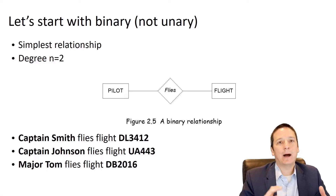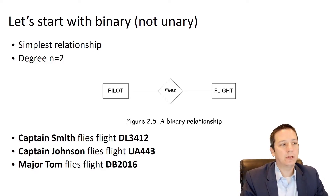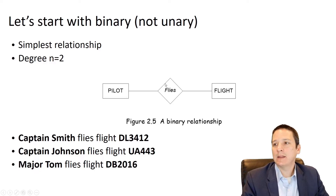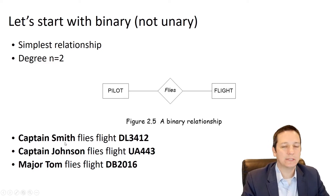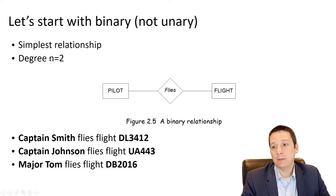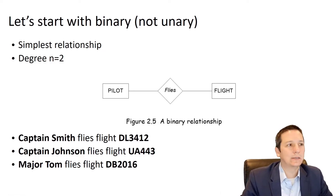To get started, we're going to talk about binary relationships, which is the simplest. We're starting with two — binary relationships have a degree of two, which simply means there are two entities involved in the relationship. For example, a pilot flies a flight, or a flight is flown by a pilot. An instance like Captain Smith flies flight DL-3412, Captain Johnson flies UA-443, and Major Tom flies DB-2016. Binary works in either direction — just two entities involved in this relationship.